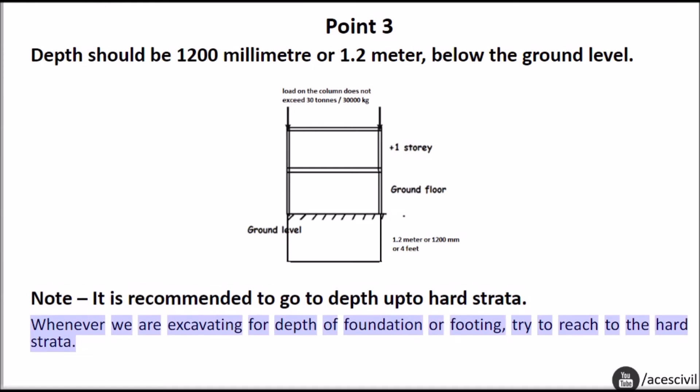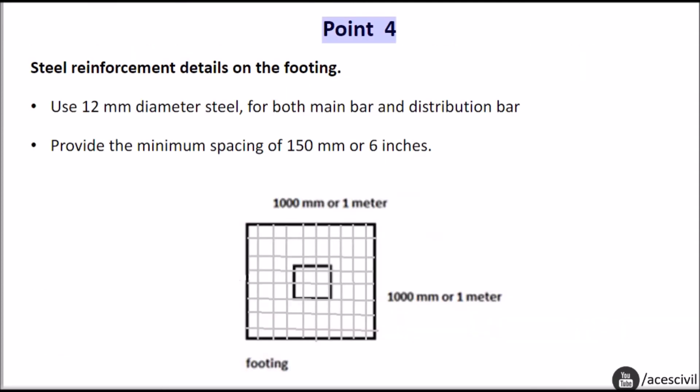Point four: steel reinforcement details on the footing. Use 12 millimeters diameter steel for both main bar and distribution bar. Provide the minimum spacing of 150 millimeters or six inches.